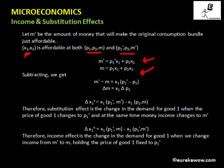If we subtract the two equations, we get M dash minus M on the left-hand side, and on the right-hand side we get X1 times (P1 dash minus P1), since P2 X2 cancels. So delta M equals M dash minus M, and delta P1 equals P1 dash minus P1, giving us the equation: delta M equals X1 times delta P1.